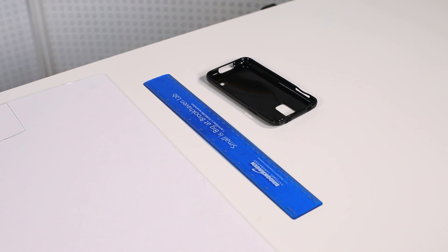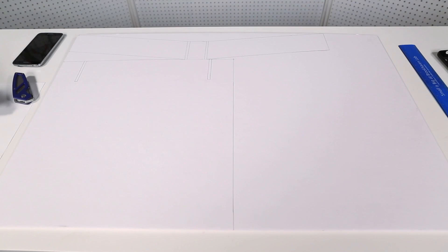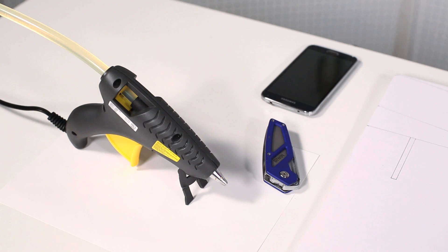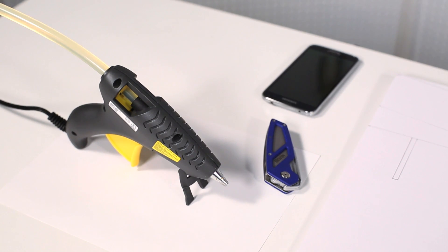For this project, you'll need a smartphone case, a ruler, a piece of foam board, an X-Acto knife, a hot glue gun, and your smartphone.